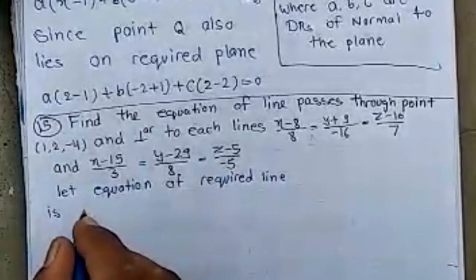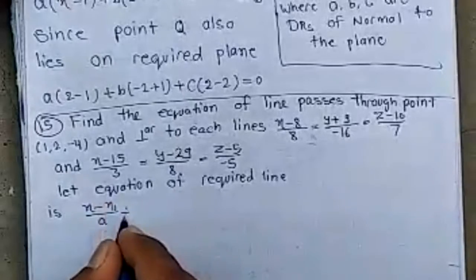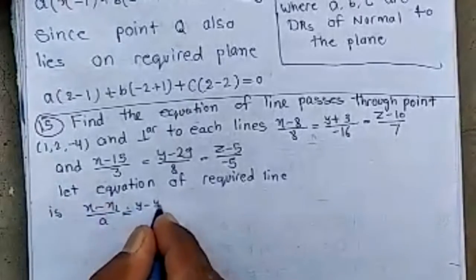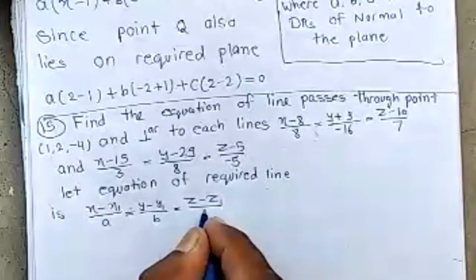x minus x1 by A equal y minus y1 by B equal z minus z1 by C.